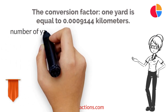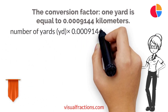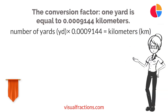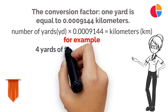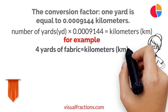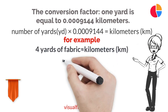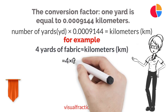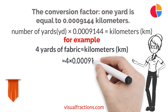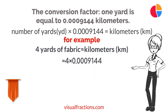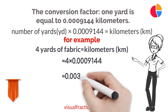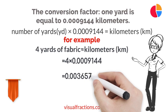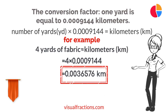To convert yards to kilometers, you simply need to multiply the number of yards by this conversion factor. Suppose you have 4 yards of fabric that you need to convert to kilometers. We start by multiplying 4 by 0.0009144, which gives us approximately 0.0036576 kilometers.